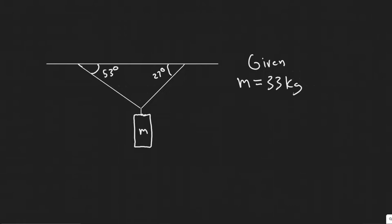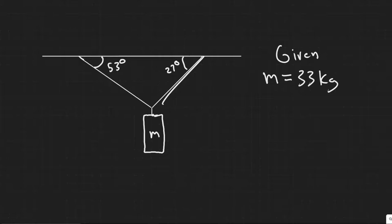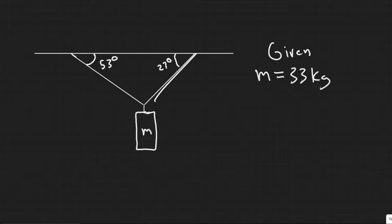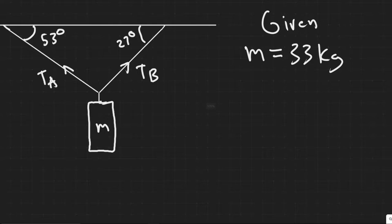In this problem we're told to find the tension in the two wires supporting the traffic light shown in this figure. What you have is this traffic light hanging down from these two cords, and we're given the mass of this traffic light. What we're trying to find is the tension in both these cords. I'm going to call this one T_A, the tension in cord A, and this one T_B, the tension in cord B.